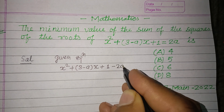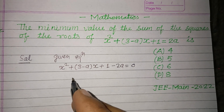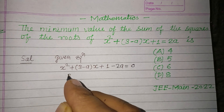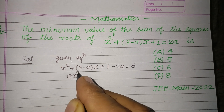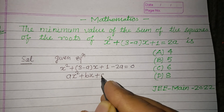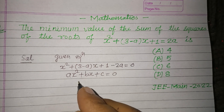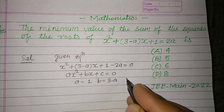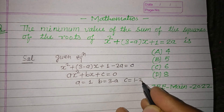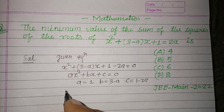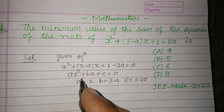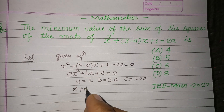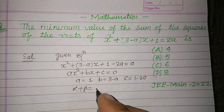We take 2a to the left side, so the equation becomes x² + (3 - a)x + (1 - 2a) = 0. Comparing with ax² + bx + c = 0, here a = 1, b = (3 - a), and c = (1 - 2a).